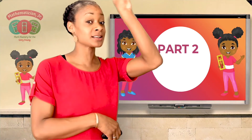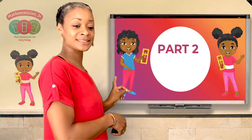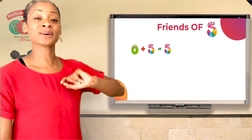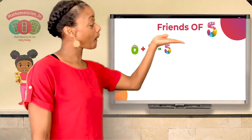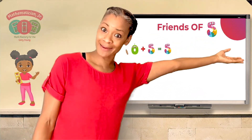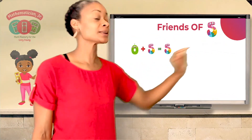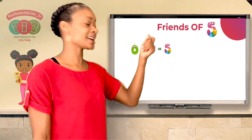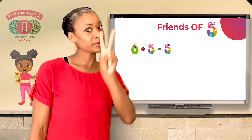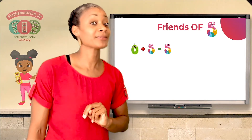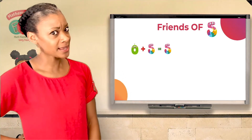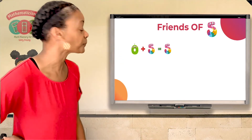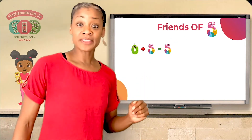Part two of our activity: we're going through these quickly because we're still reviewing. You're going to see a number sentence on the screen, just like this one. This number sentence is zero plus five equals five. Look at the first two numbers — in this case zero and five — and tell me if they are friends of five. If they are, we'll use our sound effects.